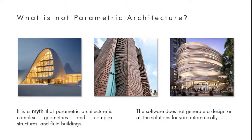The myth is that every organic-looking, fluid-looking, or complex-looking building is a product of parametric architecture — and that is completely false. A building could be a cuboid and still be designed parametrically. It's all about how you're controlling the parameters and how much control you have over the geometry you are creating. You could design a simple cuboid or the most complex underwater-inspired geometry using parametric design.